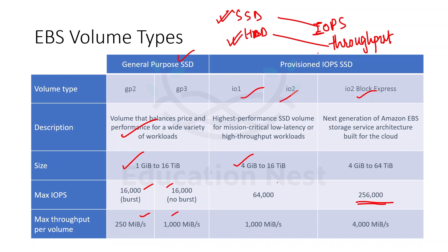IO1 and IO2 support from 4 GB to 16 TB. You can see the difference: in general purpose we start from 1 GB, IO1 starts minimum from 4 GB, and IO2 Block Express starts from 4 GB and goes up to 64 TB. 64,000 is the IOPS we get for IO1/IO2, and this is the throughput per volume.